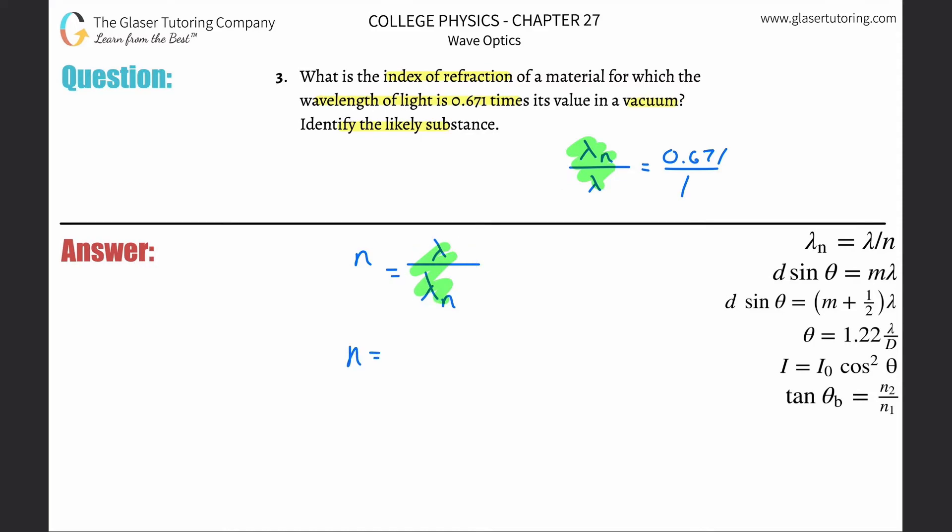In other words, the index of refraction will be equal to 1 over 0.671. So we can simply plug that into the calculator, 1 divided by 0.671, we get about 1.49.